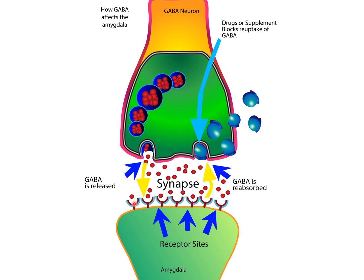Benzodiazepines enhance GABA neurotransmission. When you have both GABA and a benzodiazepine binding to the GABA receptor at the same time, it actually increases the opening of the ion channel even more, allowing for even more chloride ions to pass through, and therefore facilitating inhibition post-synaptically. Together, GABA and benzodiazepines further inhibit the amygdala and therefore reduce anxiety even more.